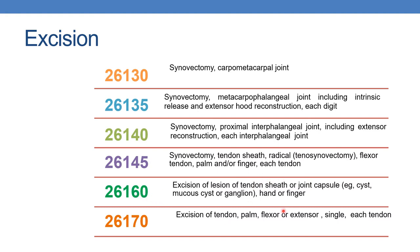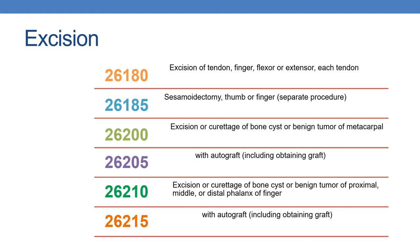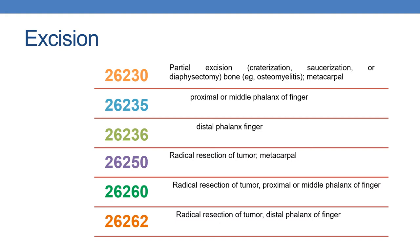The next is 26160: excision of lesion of tendon or tendon sheath, palm, flexor or extensor, each tendon. The next is 26185: sesamoidectomy, thumb or finger. The next is 26200: excision or curettage of bone cyst or benign tumor of metacarpal. With autograft, you need to report 26205. For excision and curettage of bone cyst or benign tumor of proximal, middle or distal phalanx of finger, report 26210. With autograft, report 26215.